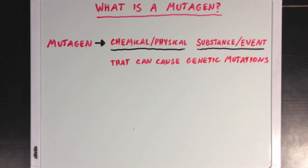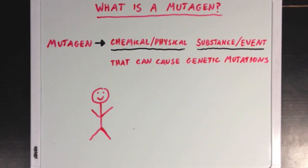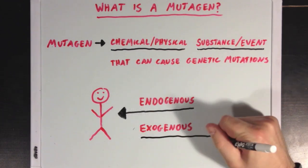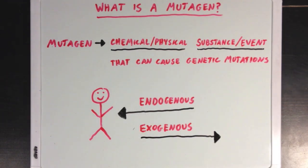We classify mutagens into two different categories. A mutagen could be classified as endogenous if it comes from inside a person's body — something already found in the organism. But an exogenous mutagen is one that comes from outside the affected organism, something from the external environment.